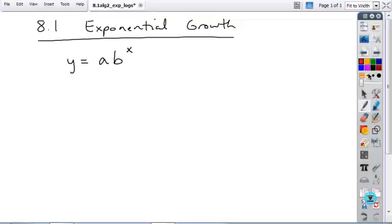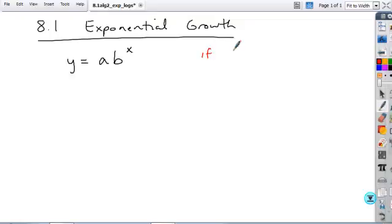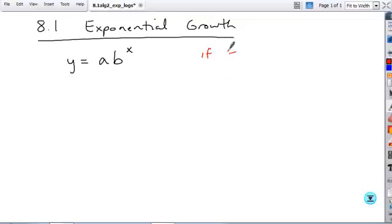Now, there's a couple other things, and that is if A is a positive number and B is some number greater than 1, then this function, Y equals A times B to the X, is called a growth function.